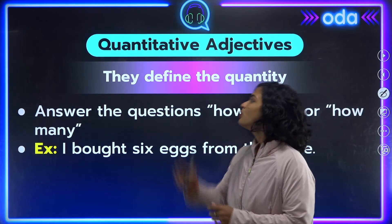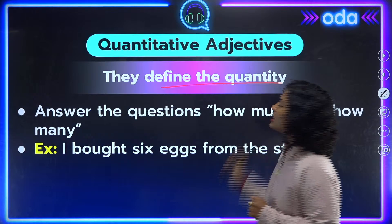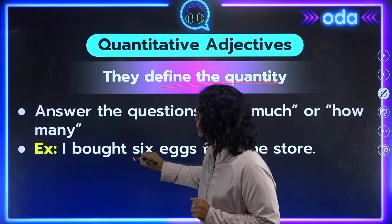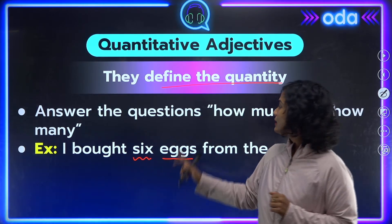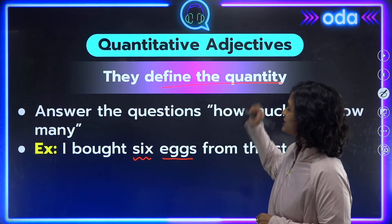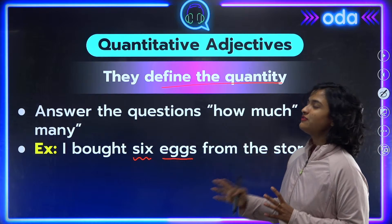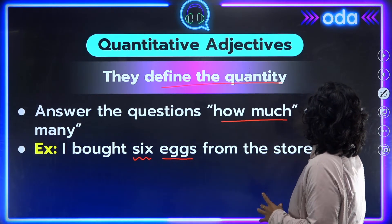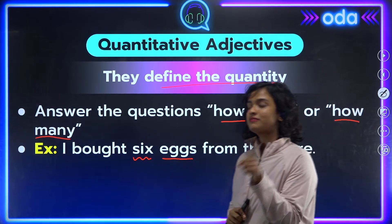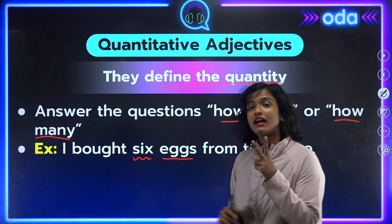Our second type is quantitative adjectives. As the name suggests, these tell us about the quantity of the noun or pronoun. For example, 'I bought six eggs' — 'eggs' is our noun and 'six' is our quantitative adjective telling us how many eggs were bought. These adjectives usually answer the question 'how much' or 'how many.'